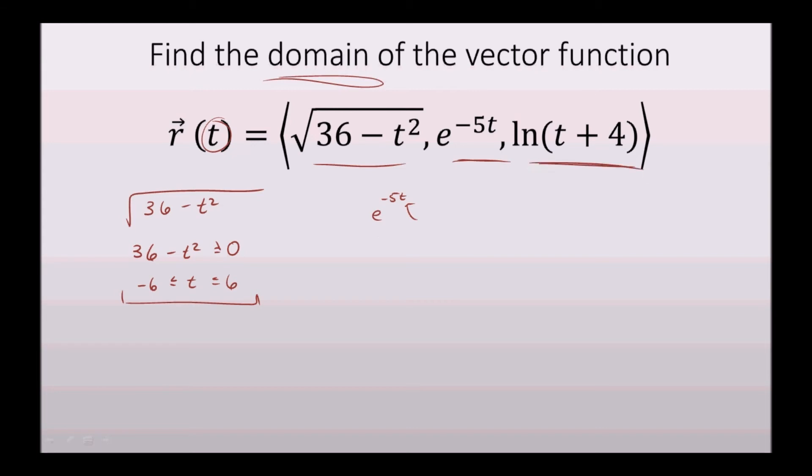So the third component is the natural log of t plus 4. So we know the argument, this part of a natural log function, must be greater than 0. We can take the natural log of anything greater than 0, so t plus 4 is greater than 0, so we know that t must be greater than negative 4.